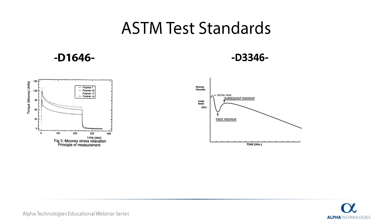This test is separated into three parts: the measurement of Mooney viscosity, stress relaxation, and pre-vulcanization characteristics. Each of the three measurements are recorded by a metal disc embedded in a rubber specimen contained in a rigid cylinder maintained at specific pressure and temperature. For viscosity, the rotor is rotated during the test at a constant rotational speed.